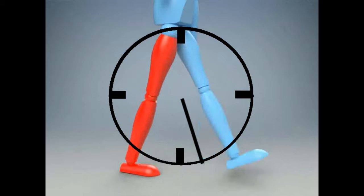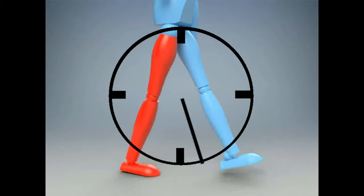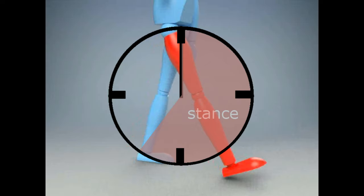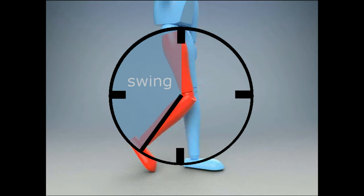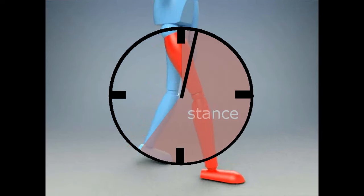The gait cycle is separated into two main sections. Stance is when the reference limb is on the ground and takes up about 60% of the gait cycle. Swing is the remaining 40% of the gait cycle when the reference limb is in the air.